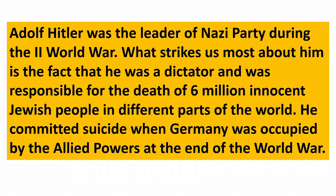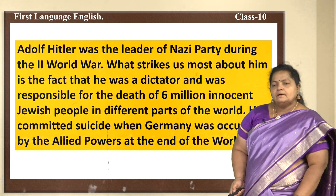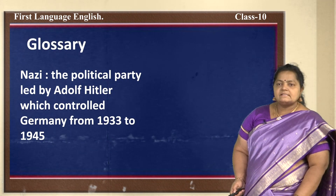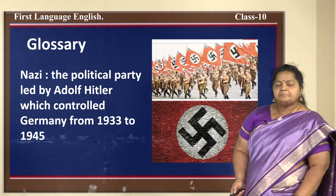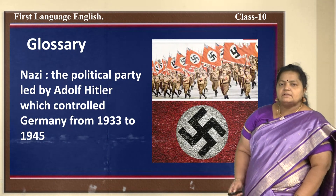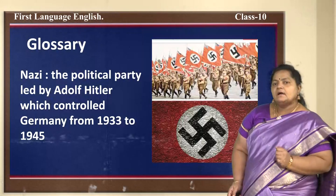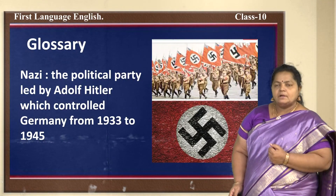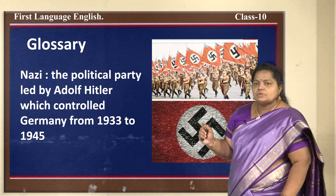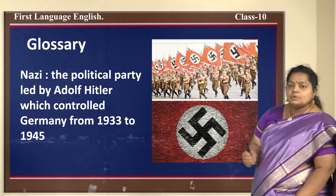Hitler committed suicide when Germany was occupied by the Allied powers at the end of the World War. Now let us look at the new words and meanings. 'Nazi' — the political party led by Adolf Hitler which controlled Germany from 1933 to 1945. You will be learning more about this party in social science.